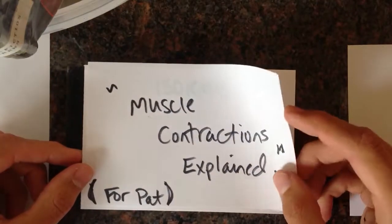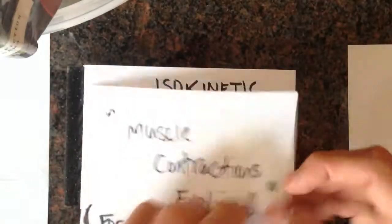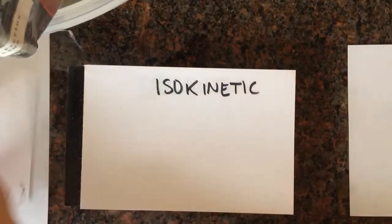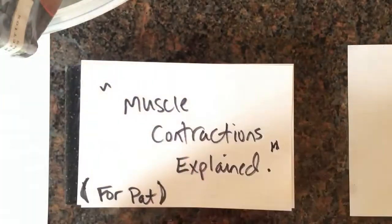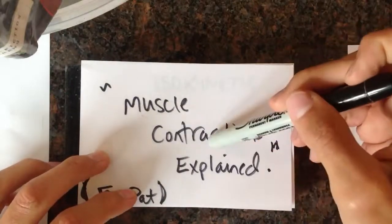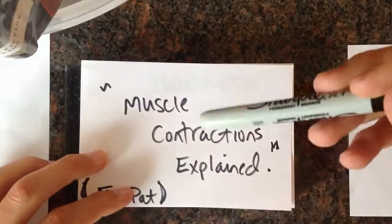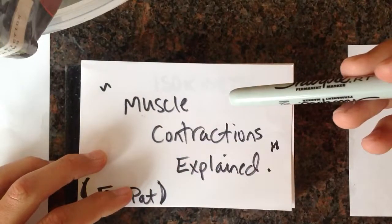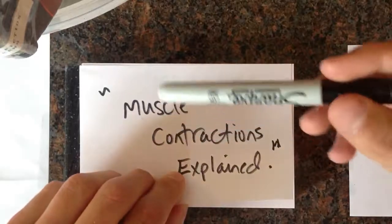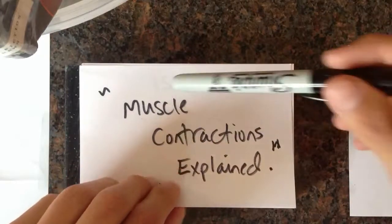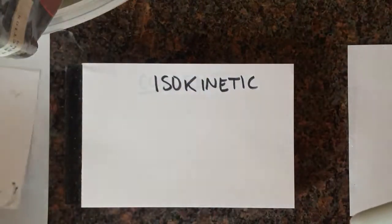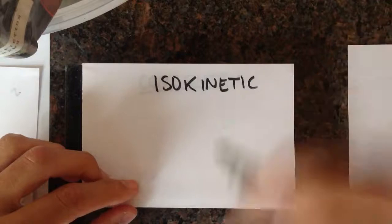So, muscle contractions explained. All these terms are in reference to the length of the muscle. All of them are in reference to the length of the muscle during contraction.